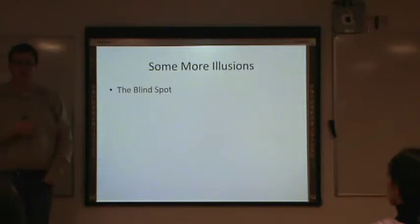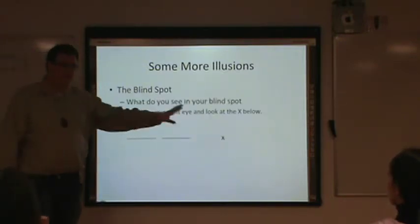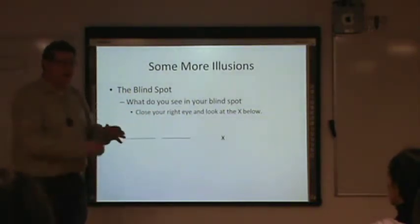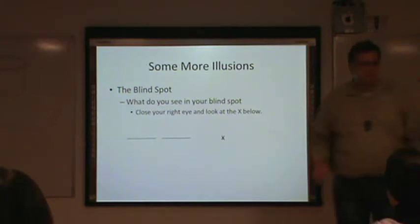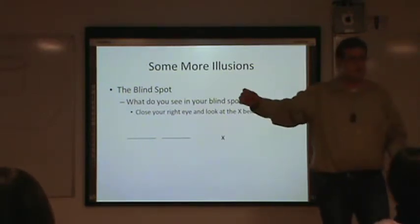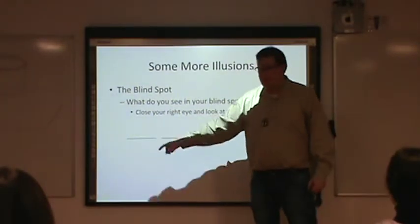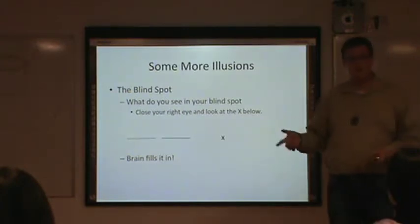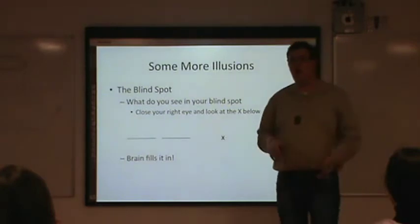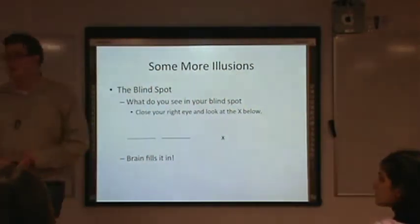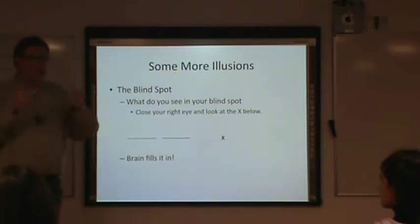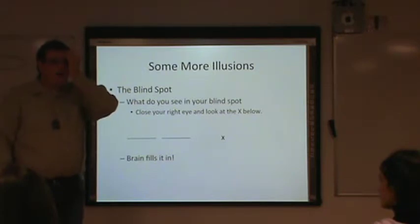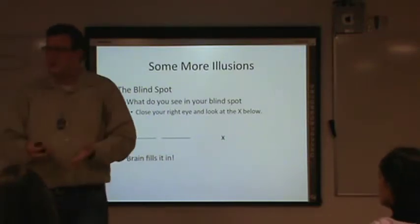The blind spot: if you did the demonstration on the study guide, the hole in the line just disappears — it looks like the line is completely continuous. This is an illusion because there actually is a gap, but the brain fills in the space based on surrounding information. Even with one eye closed, you're not aware of your blind spot — your brain fills it in with stuff that's around it.